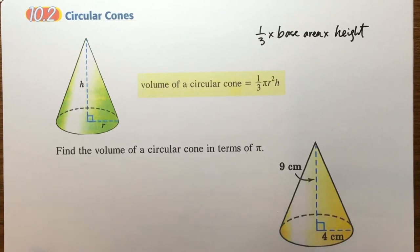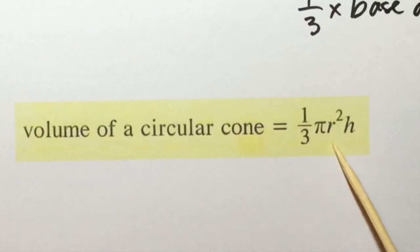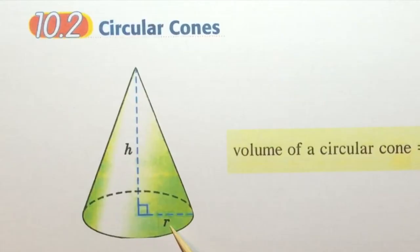But of course the base is a circle, therefore the base area is given by pi r squared where r is the radius of the circle and h is the height of the cone.